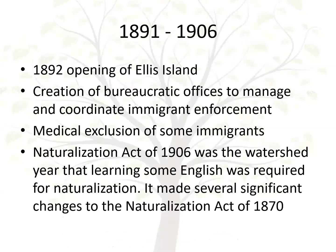The next banding is 1891 to 1906. In 1892, Ellis Island opened, creating bureaucratic offices to manage all immigrant enforcement. There was medical exclusion of some immigrants. The Naturalization Act of 1906 was a watershed year — learning English was required for naturalization, whereas previously literacy didn't have to be in English specifically. By 1892, we made a complete transition to a federal function; everything was regulated under INS, the Immigration and Naturalization Service.